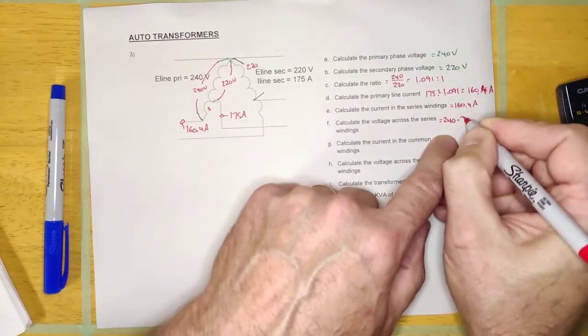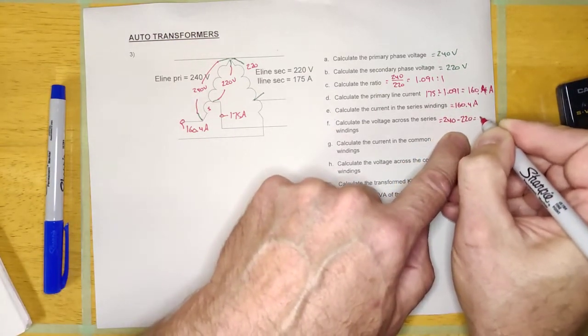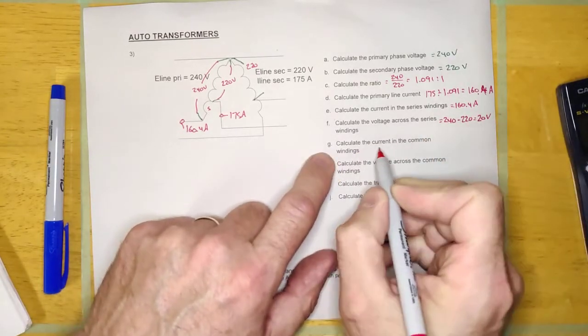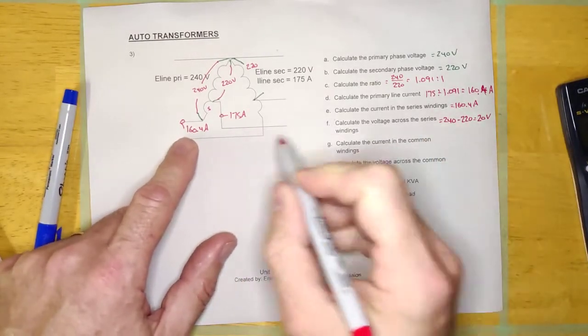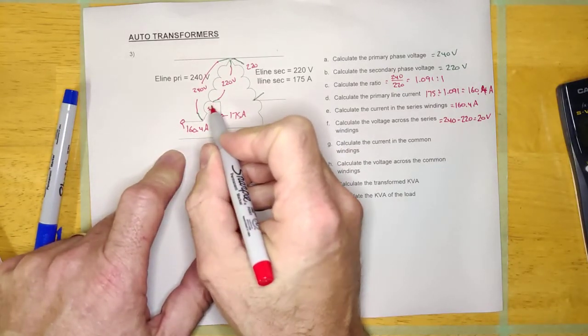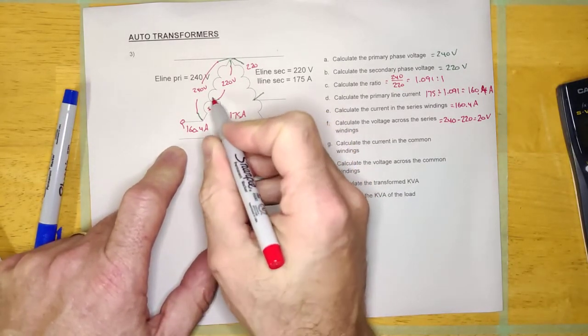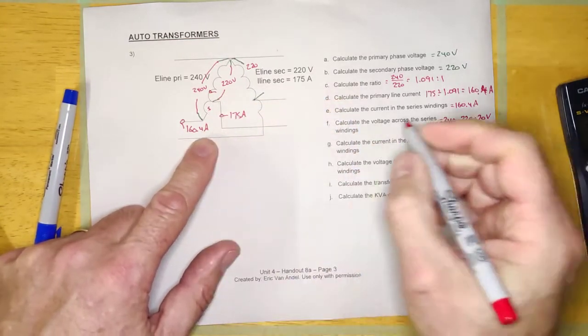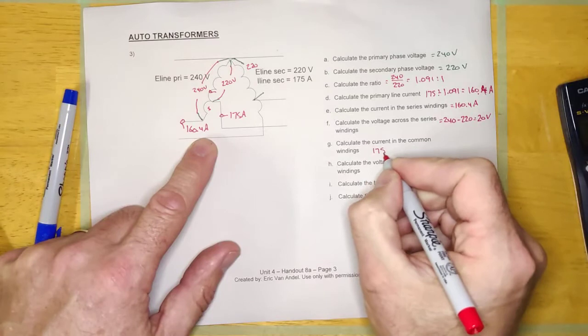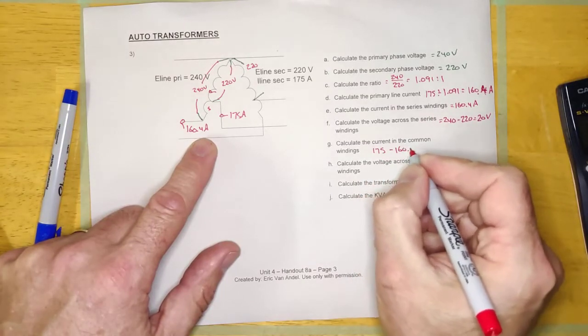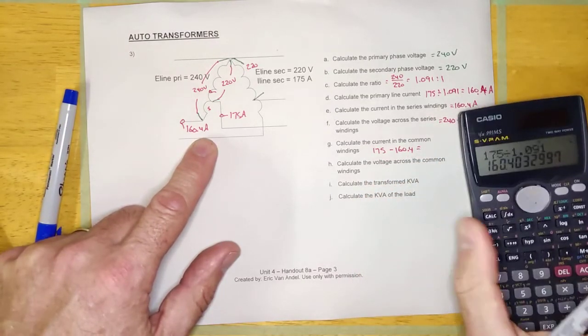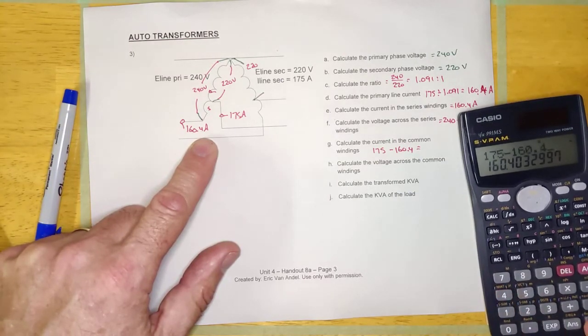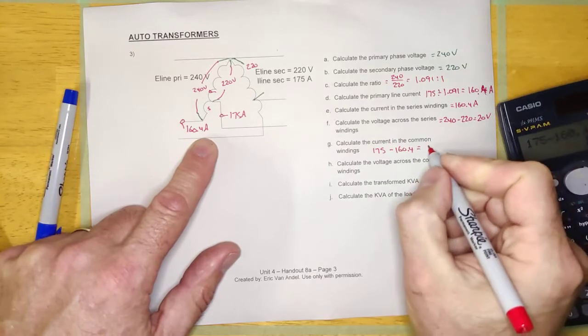Calculate the current in the common winding. Kirchhoff's law - I've got 160 amps in, 175 amps out. I'm asking about this current right here, the common current. It's going to be equal to 175 minus 160.4. 175 minus 160.4 equals 14.6 amps.